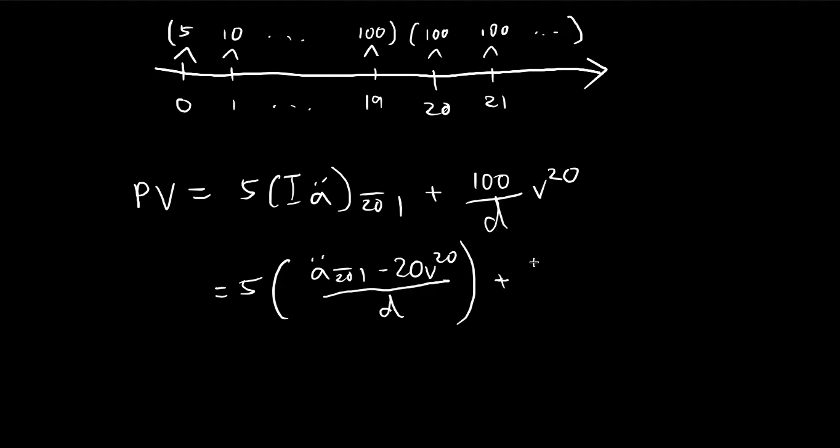Plus 100, essentially 5 times 20. So because of the 5, I can actually include this component inside this bracket. So you see that there's a 20 v 20, there's a 20 v 20. Actually, both of these will cancel out.